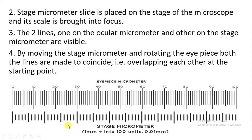Both the lines should be visible. The ocular micrometer is rotated carefully so that the lines of the stage micrometer and ocular micrometer coincide or overlap. The starting point — the 0th line of the ocular micrometer should coincide with the 0th line of the stage micrometer. Then the next line that coincides is identified — we look for the next division where both lines overlap — and we record the stage divisions and ocular micrometer divisions.